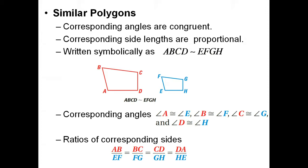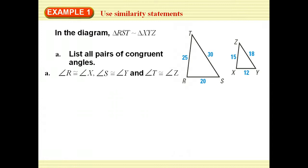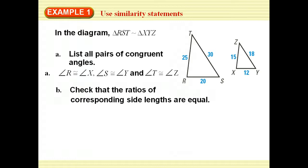In this diagram, what we're asked to do is first list all the pair corresponding angles. We could look at the diagram itself to figure this out, or we can look at our congruent statement, but we see that R corresponds to X, therefore it's congruent, S to Y and T to Z.